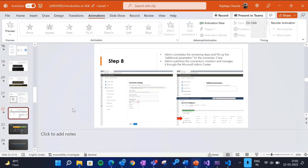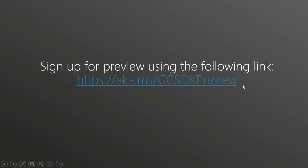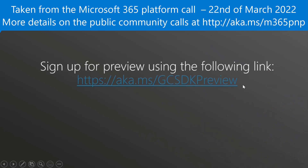That covers the demo. In terms of timelines, we are currently in private preview and expect to be in public preview by calendar year 2022. That's the same timeline around which many other experiences are coming up — so if you integrate your third-party custom connector data by then, you can also onboard into experiences like Viva Topics integration and e-discovery support around calendar year 2022 H2. I have a sign-up link for the private preview which I'll share in the chat. Feel free to post any questions — thank you.